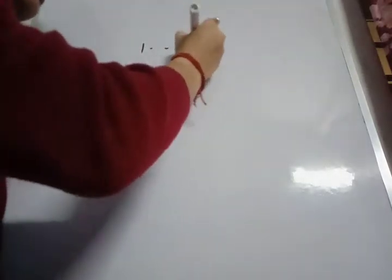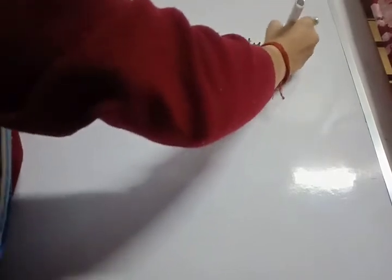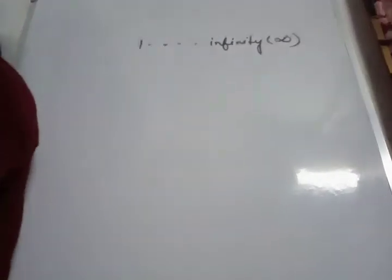So first comes the natural numbers. The numbers 1, 2, 3, 4 to infinity, those are termed as the natural numbers. Basically 1 to infinity, those numbers are the natural numbers.